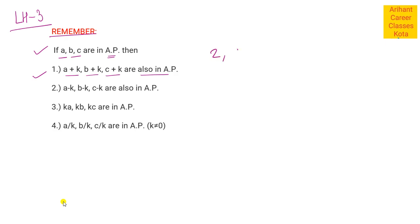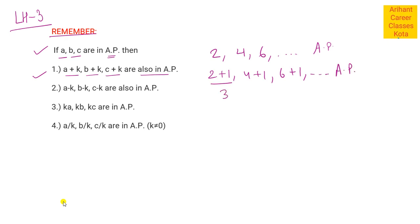For example, 2, 4, 6 — यह क्या है? एक arithmetic progression है। अब इसमें each term में मैं जैसे 1 add कर देता हूं: 2+1, 4+1, 6+1 — यह भी आपका AP में ही होगा। यहां क्या आ गया: 3, 5, और 7। यहां भी common difference 2 था, यहां भी common difference 2 है।